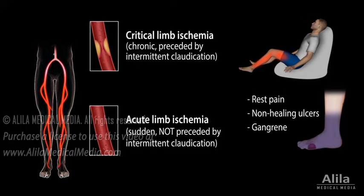Acute limb ischemia happens when there is a sudden block of blood flow, typically due to an embolism or thrombosis. Acute limb ischemia is an emergency threatening loss of limb.